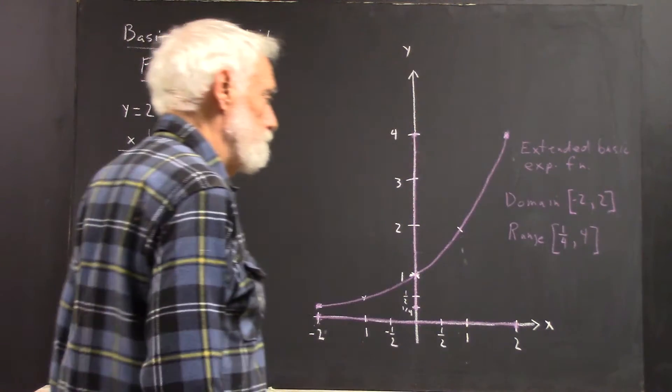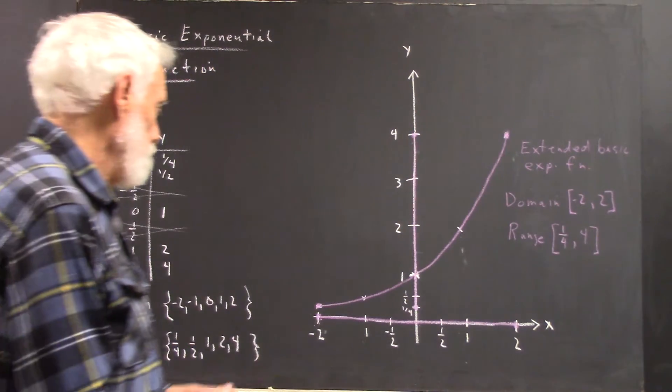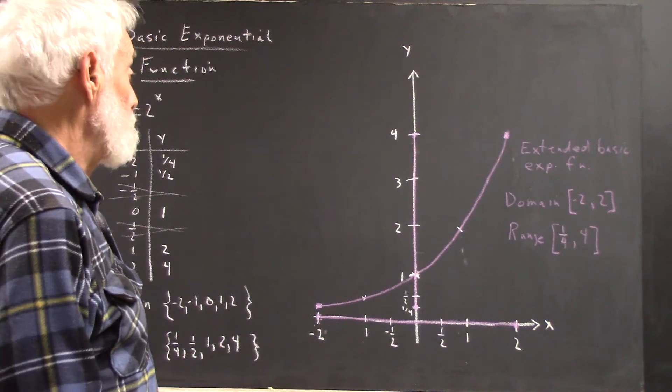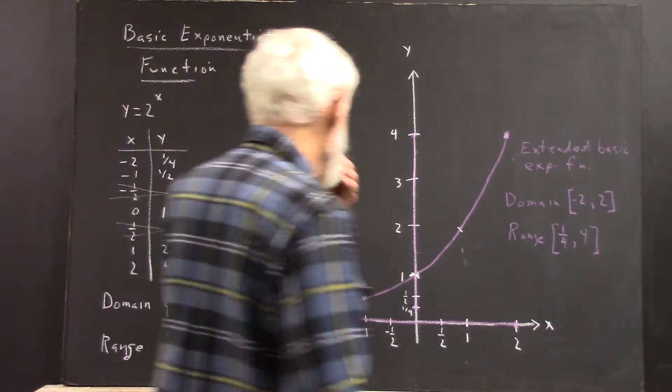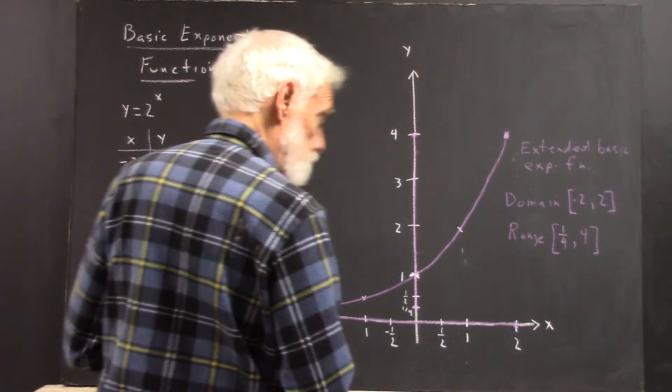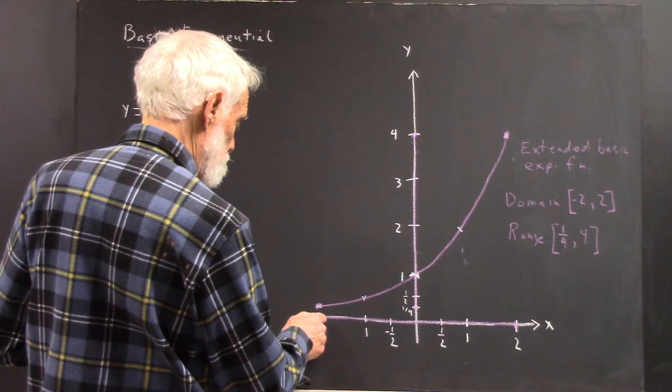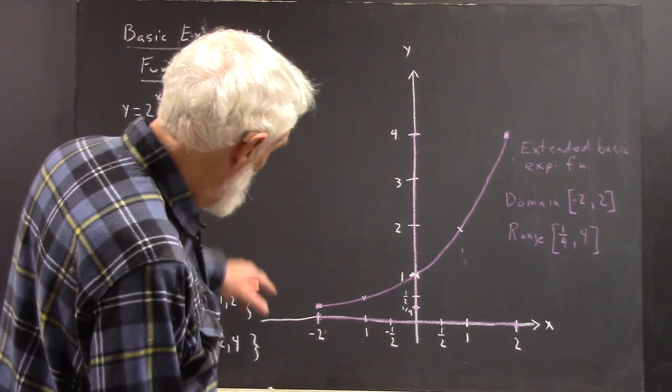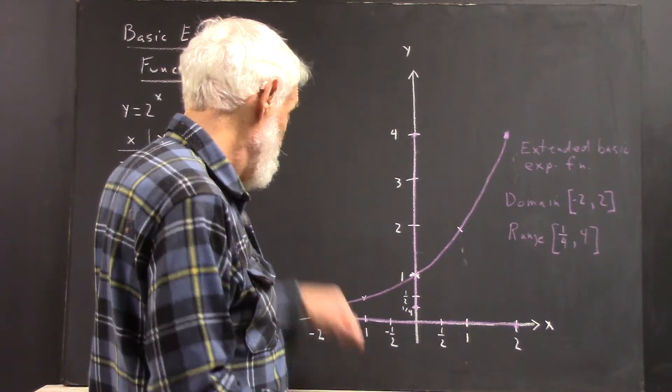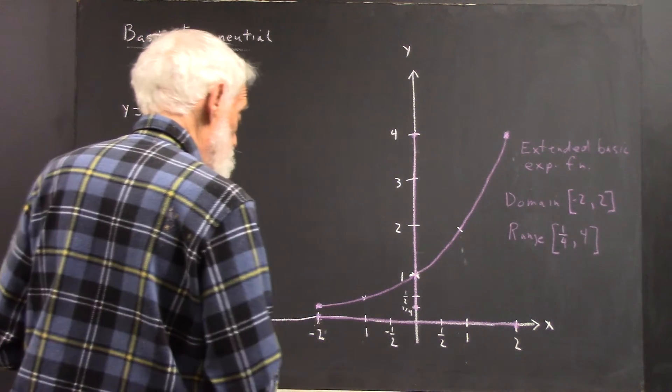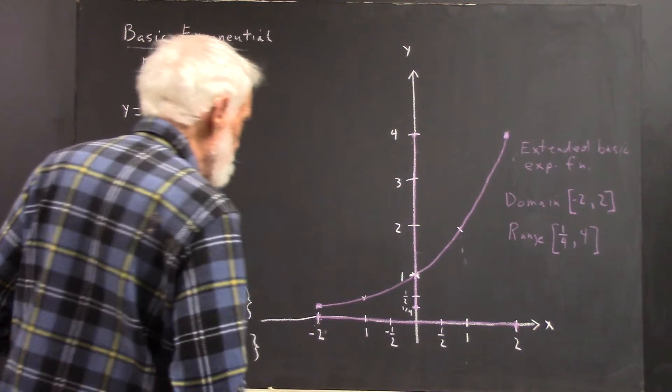So, we have the closed interval. That's the domain and the range of the extended basic function. The complete basic exponential function continues on. We didn't do a good job of maintaining the direction of that line. But, you can think about it.